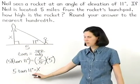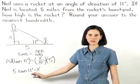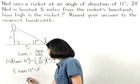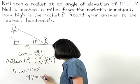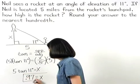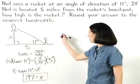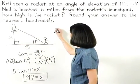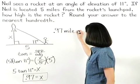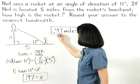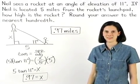Now plugging this into our calculator and rounding to the nearest hundredth gives us 0.97 equals x. So the height of the rocket is 0.97 miles.